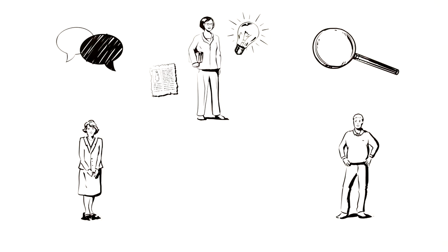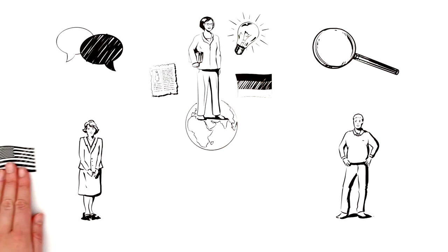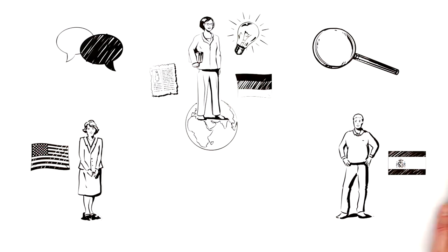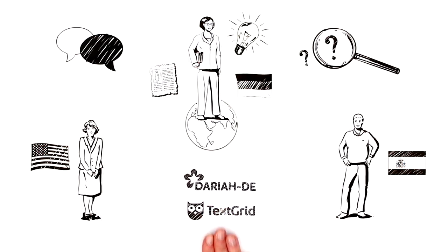Another advantage is that Anna can now work wherever she likes. It's often the case that researchers at different locations around the world are working on the same research issue or on similar subjects. Now, via DARIAH-DE or TextGrid, they can exchange information and network more easily.